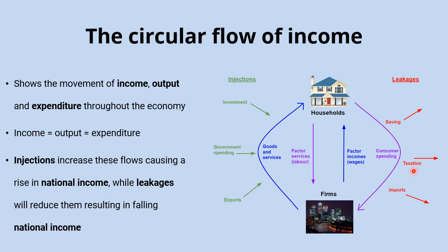We also have to consider goods and services sold internationally — exports. The spending on those exports from abroad comes in as an injection into our circular flow. And that's balanced against UK consumers who spend on imports rather than home-produced goods, which causes a final leakage from the circular flow of income.